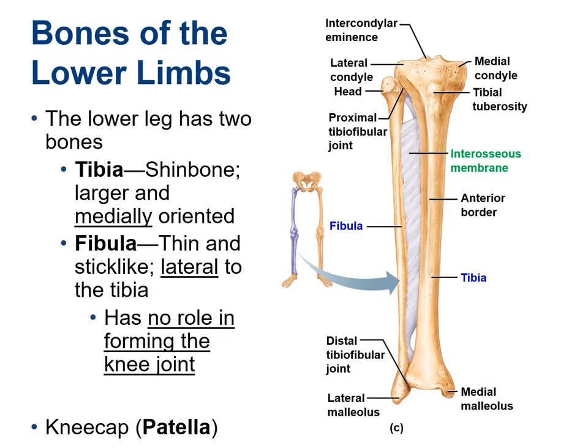The lower leg has two bones, the tibia and the fibula. The tibia is the medial and larger of the two leg bones. The fibula is thin and looks like a stick; it is lateral in position and has absolutely no role in forming the knee joint.